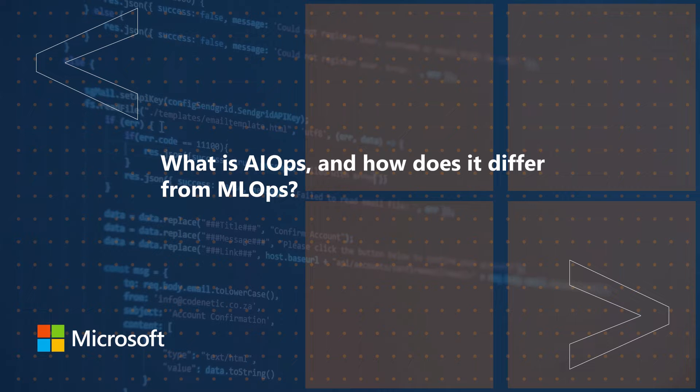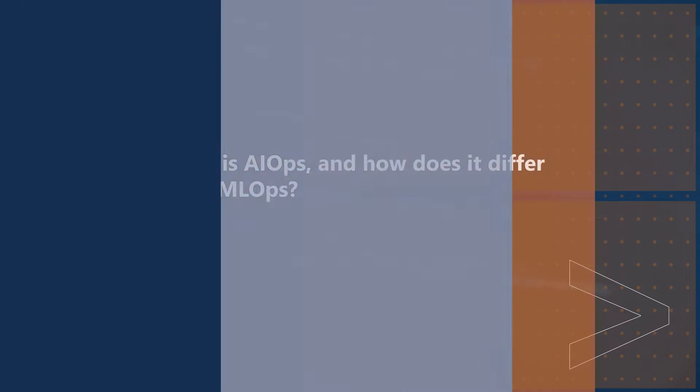So what's the difference between AIOps and MLOps? Now they sound very similar and they both sit right at that crossroads between DevOps and machine learning or artificial intelligence, but they actually represent really different ideas.